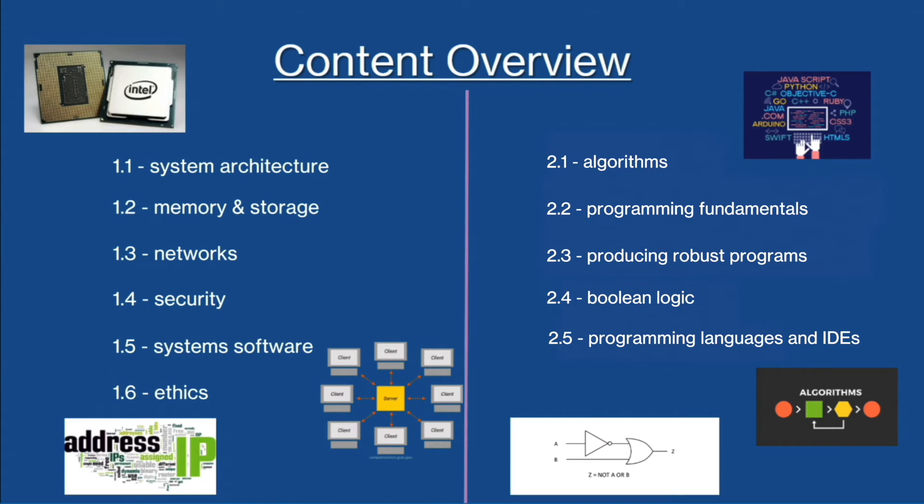The course content is split between the two papers. Paper 1 focuses on computer systems themselves, looking at the parts that make up a computer including its architecture like registers and buses as well as the different types of memory and storage. You will also look at different computer networks and their advantages and disadvantages and how we can maintain the security of these networks from threats such as hacking, malware and phishing attempts.